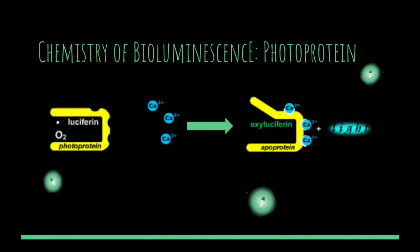Sometimes luciferin, a catalyzing protein, and a co-factor form a single unit called a photoprotein, which can be triggered to produce light when a particular ion — typically calcium — is added to the system. In these cases, light is produced in flashes rather than in a continuous glow. This occurs in submarine organisms through a photoprotein called aequorin, which is used primarily by the jellyfish Aequorea victoria.